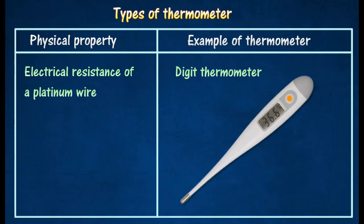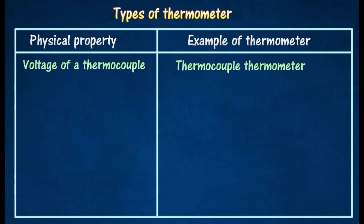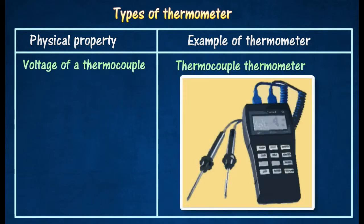Digital thermometers make use of a thermoresistor or thermistor as a temperature sensor. A thermocouple thermometer consists of two wires of different materials, such as copper and iron, joined together to form two junctions.